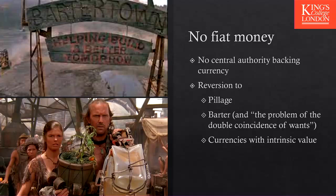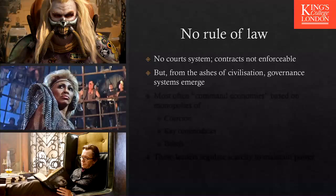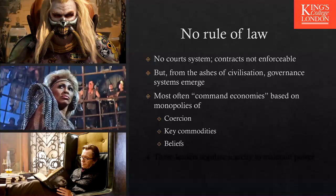There's no rule of law, no court system, nothing enforceable. If you have a contract with someone, you cannot go to court and say this person reneged on it. But some degree of governance emerges from the ashes of civilization. These leaders — like Auntie Entity (Tina Turner) in Mad Max, or the leader in The Book of Eli — create what are called command economies. A command economy is where a person or small group tells everybody what to eat, buy, produce, and so on. These leaders have monopolies over coercion, because they have the monopoly of violence; in Bartertown, the first thing you have to do when you enter is leave your weapons.